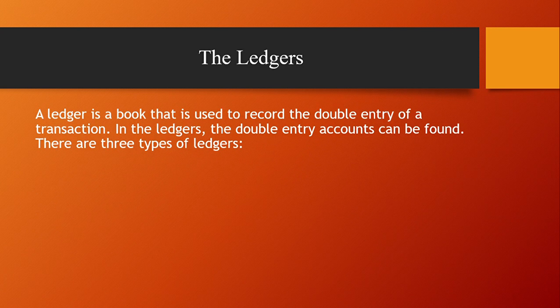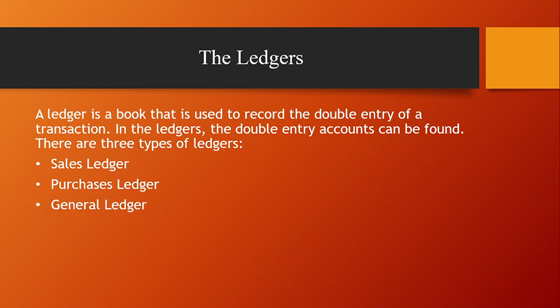A ledger is a book used to record double-entry transactions. In the ledgers, the double-entry accounts can be found, and there are three types: the sales ledger, the purchases ledger, and the general ledger. The sales ledger is used to record the accounts of debtors. The purchases ledger is where you find creditors' accounts. The general ledger is where you find everything else — expenses, assets, liabilities, and so on.